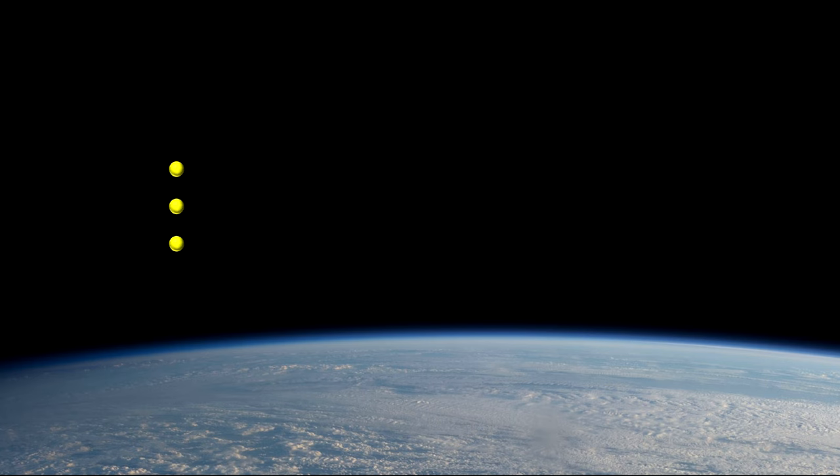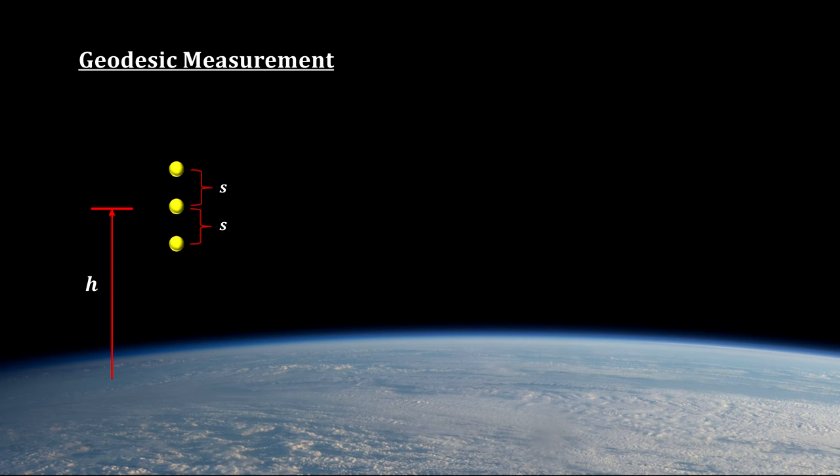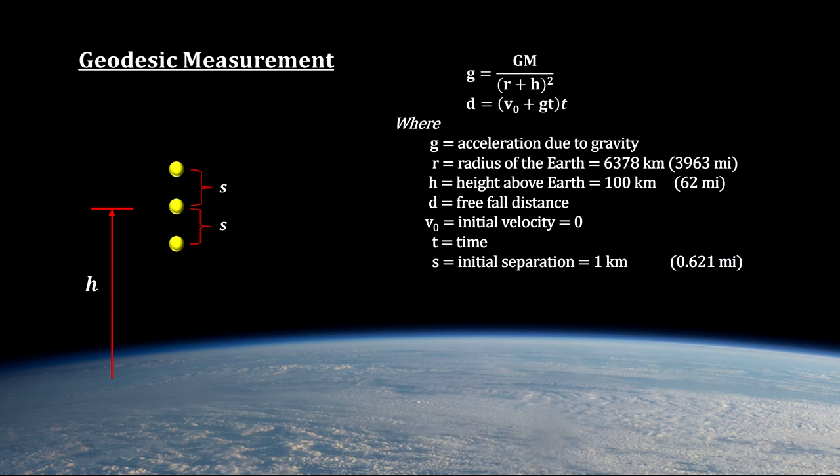For example, if we place three test particles vertically above the Earth's atmosphere and separate them by a small amount, we can see what happens when they fall freely along their geodesic lines towards the center of the Earth.